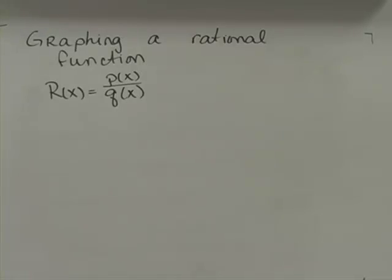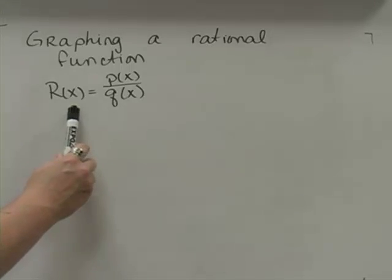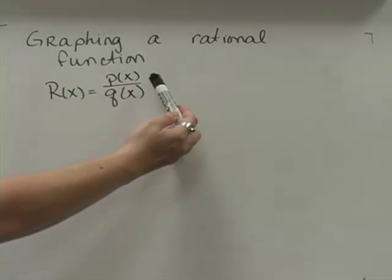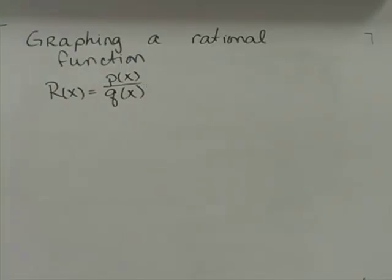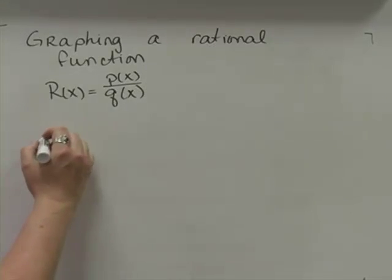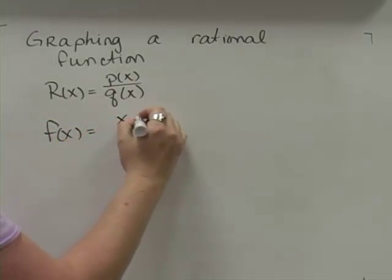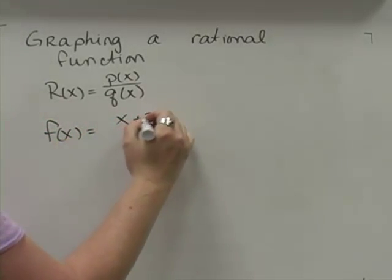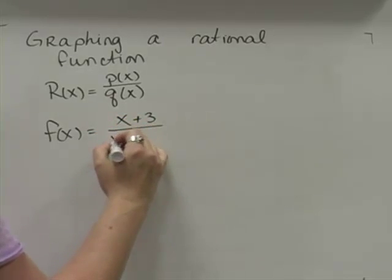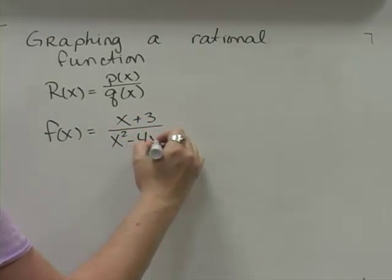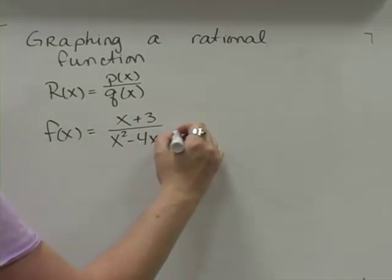This is Teresa Adams and what we're going to be doing today is graphing a rational function. Recall that rational functions, r of x, is equal to p of x over q of x, where both p and q are polynomial functions. So let's look at our first one: f of x is equal to x plus 3 over x squared minus 4x minus 5.